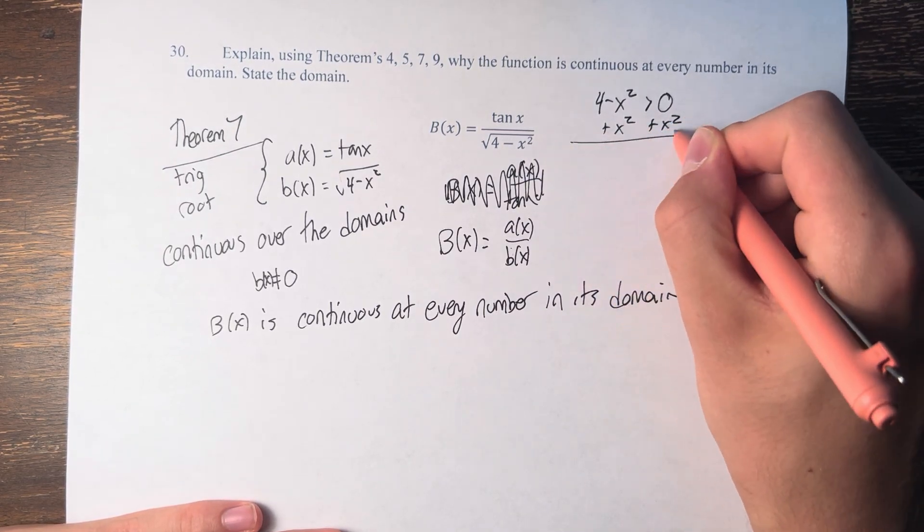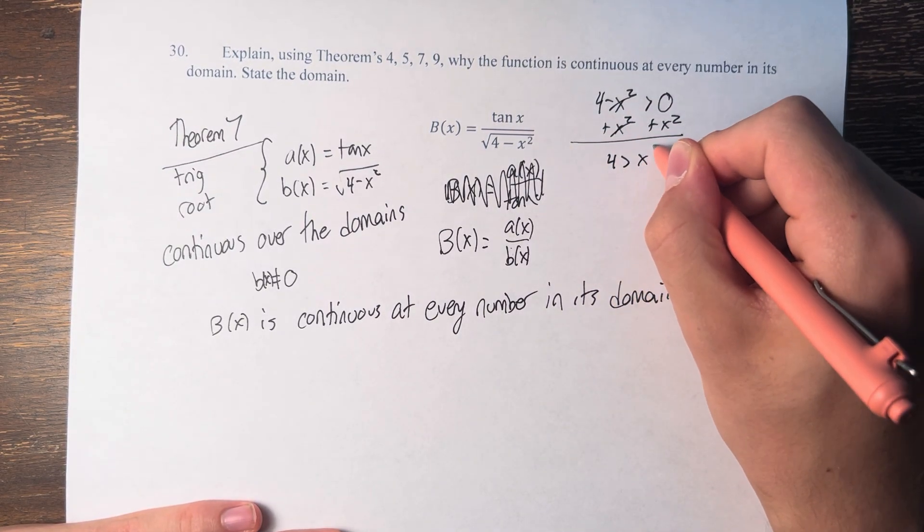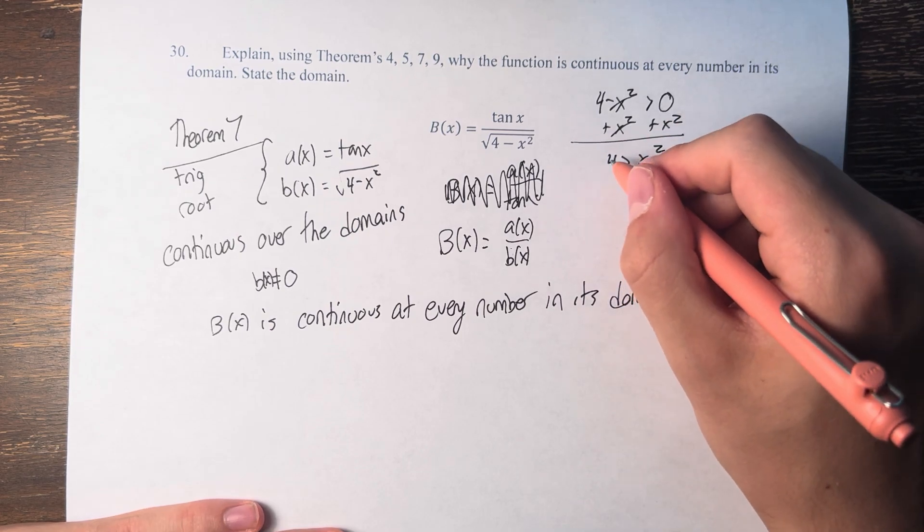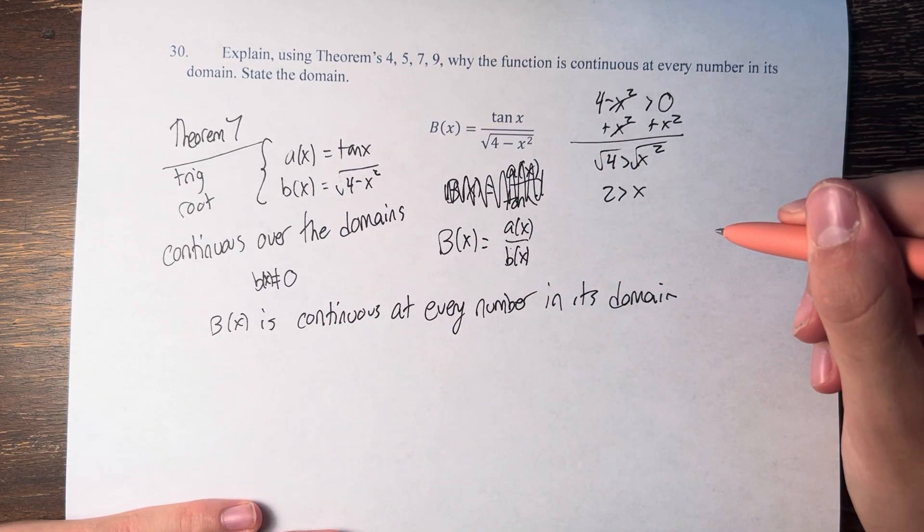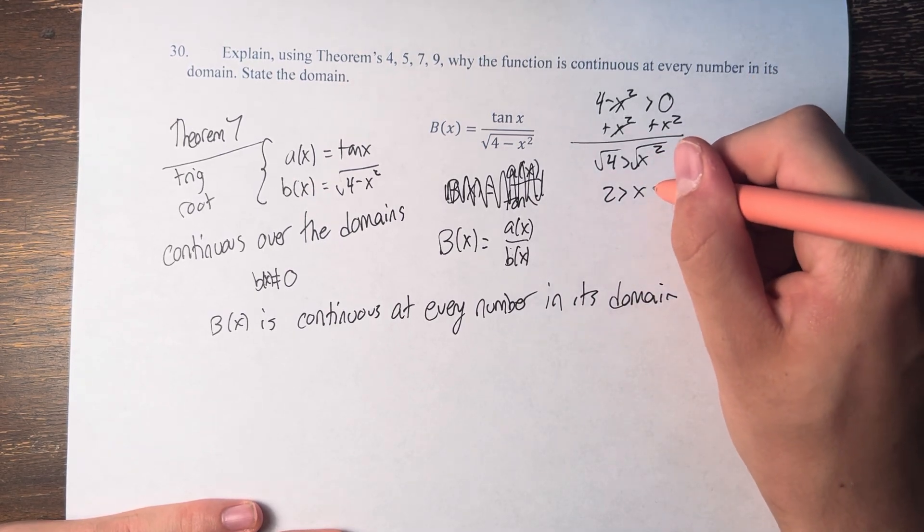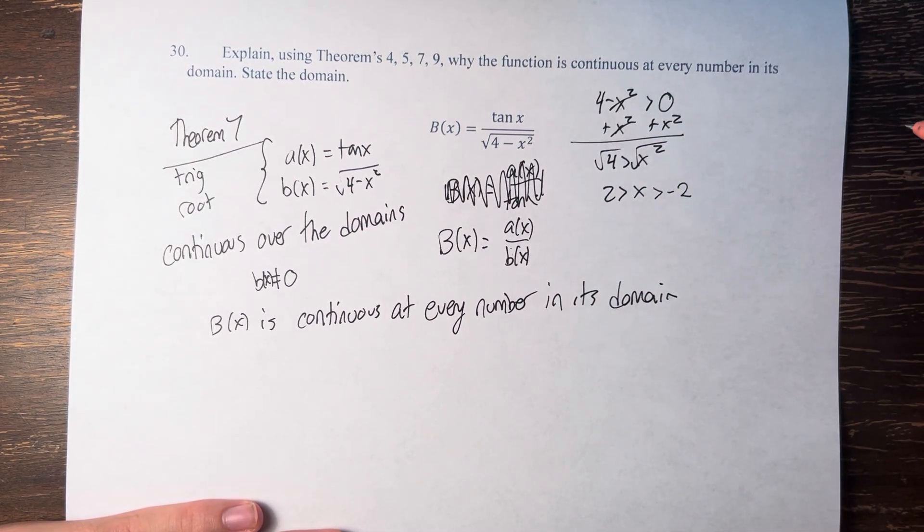Solving for this, we get that 4 is greater than x squared, and taking the square root, we get that 2 is greater than x. We have to consider the fact that negative numbers also exist, so therefore we have to add that it's also greater than negative 2, and we can't go below negative 2.